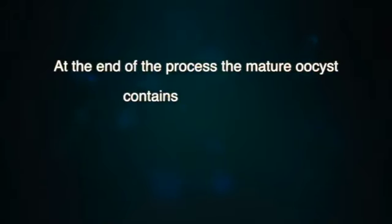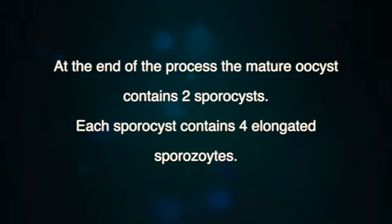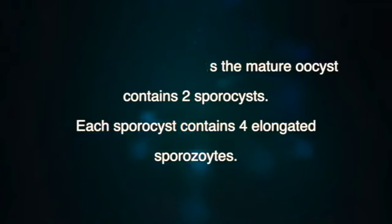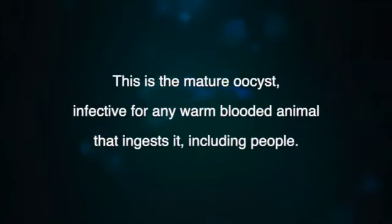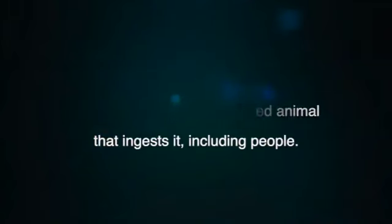At the end of the process, the mature oocyst contains two sporocysts. Each sporocyst contains four elongated sporozoites. This is the mature oocyst, infective for any warm-blooded animal that ingests it, including people.